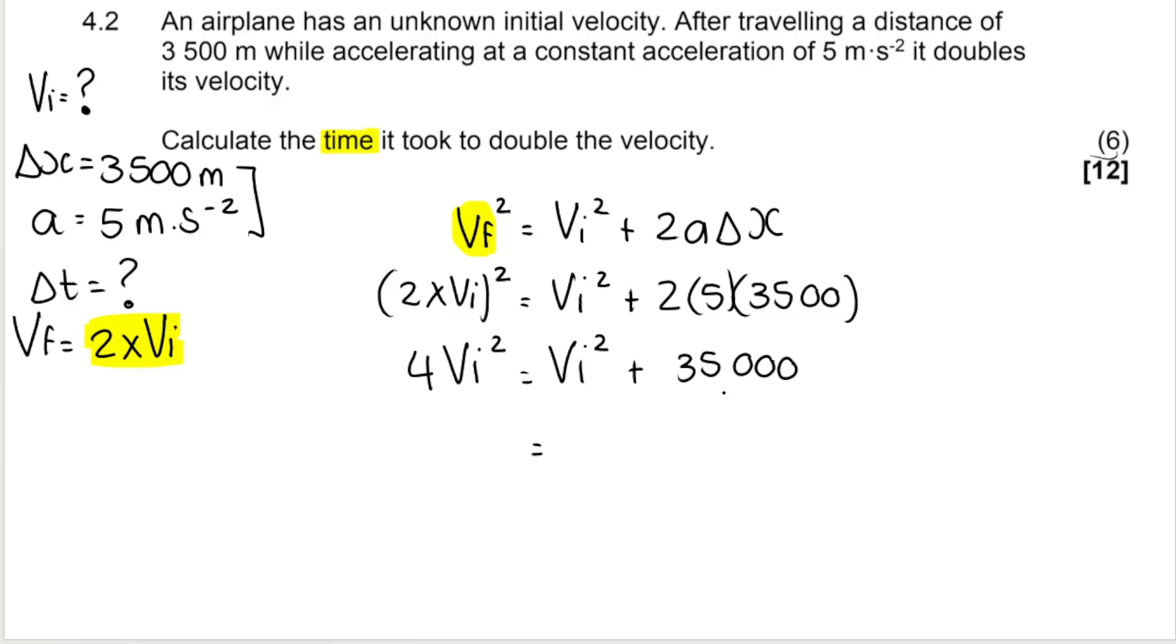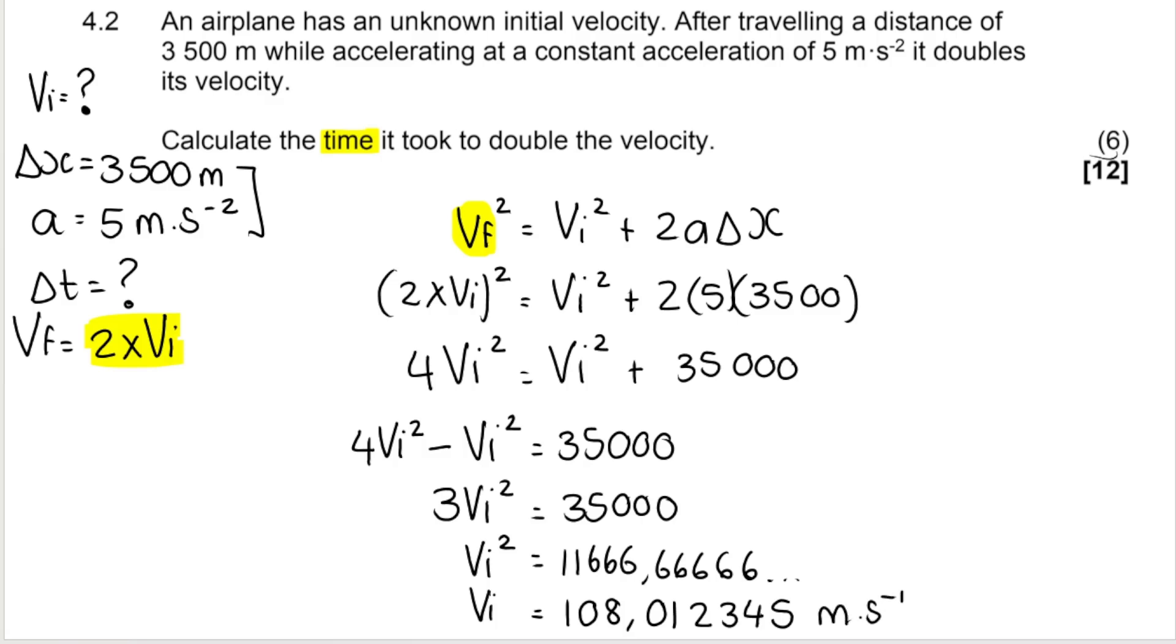Now, I don't know if you can tell, but algebraically, this is very, very possible and very, very easy. So we bring the VI squares to one side. So I've got 4VI squared minus 1VI squared equals 35,000. Then I've got, what's 4 minus 1? 3VI squared and 35,000. Divide both sides by 3, which gives me the following. Okay, this is a recurring number. And then I square root both sides to get VI by itself. Opposite of square is square root. And I get 108, 012345. Don't round it off because we're not done with the question.